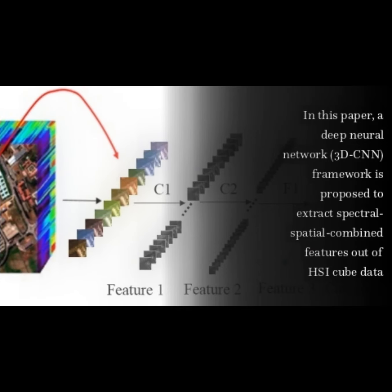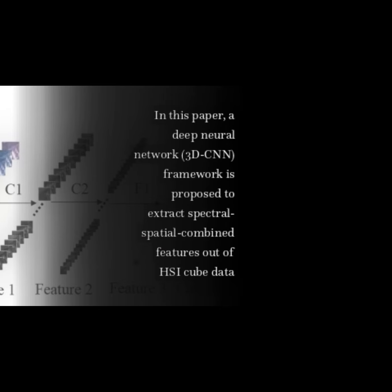In this paper, a deep neural network — 3D CNN — framework is proposed to extract spectro-spatial combined features out of HSI cube data.